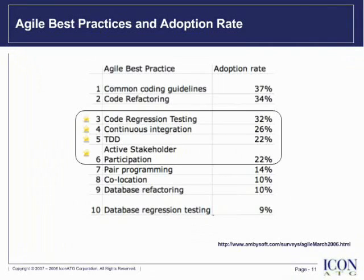Finally, we'll look at Active Stakeholder Participation. When the team is making decisions at a rapid pace, they need the stakeholder to actively engage on a daily basis. The stakeholder needs to manage and prioritize the product backlog, accept or reject work products, be responsible for the application's business value, and facilitate communication of information between the business and the development team.